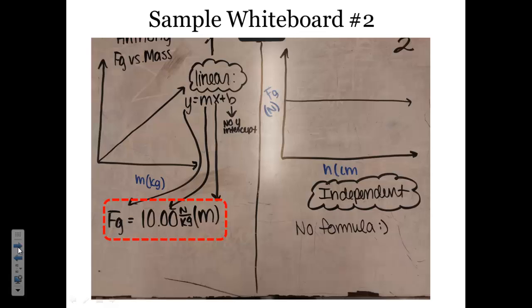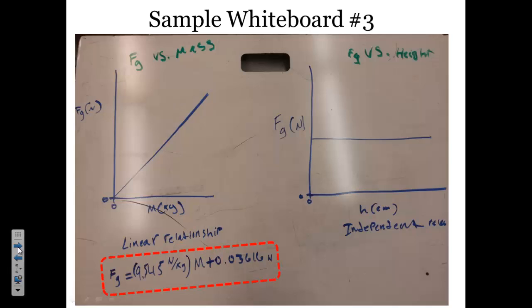And the last sample whiteboard also showing the same type of relationships. We look at the equation for force versus mass. We have a slope of 9.5 newtons per kilogram and an even smaller y-intercept.